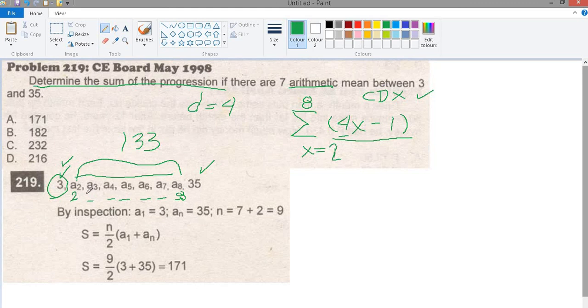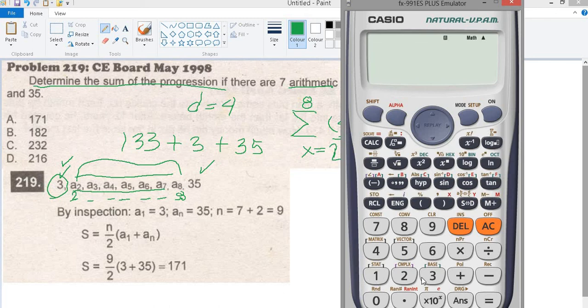If we are only looking for the 7th term in between, since you are looking for sum of all terms, plus 3 plus 35. Sum of all terms, 133 plus 3 plus 35 equals 171. This is the final answer.